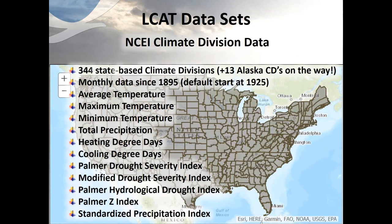Current datasets — four main datasets right now, starting with the NCEI climate division data. We have 344 state-based climate divisions from NCDC/NCEI with 13 Alaska climate divisions on the way. Monthly data since 1895. I want to draw attention especially to the drought parameters towards the bottom — the Palmer Hydrological Drought Index, the Z Index, Drought Severity Index, and Modified Drought Severity Index. We found during a recent user study that a lot of our users didn't even know the drought parameters were there.